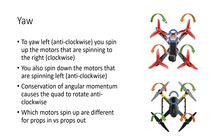For the props-in quad, if I want to turn to the left or anti-clockwise I spin up the clockwise motors which are front left and rear right. However, if I'm running props out and I want to turn left or anti-clockwise I end up spinning up the front right and the rear left motors. And that difference actually turns out to matter quite a bit.